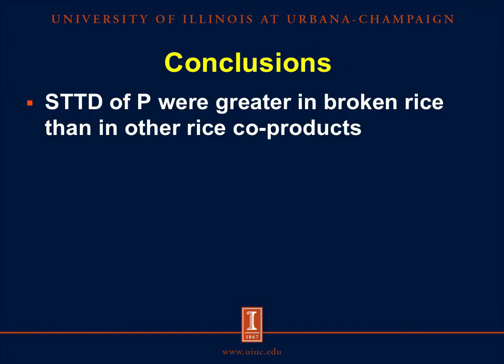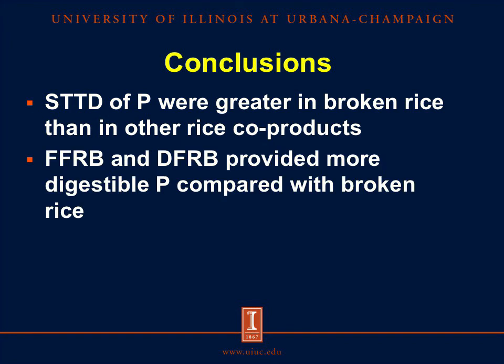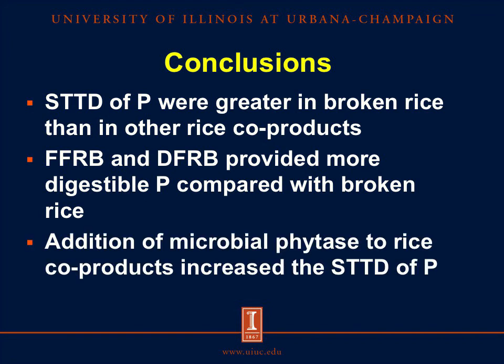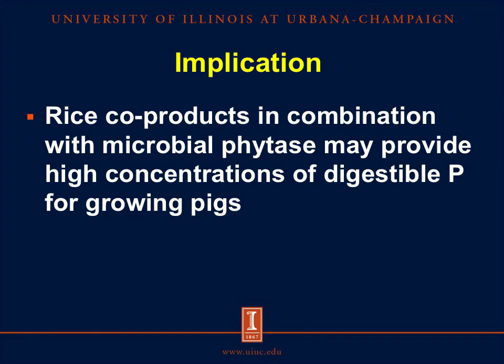In conclusion, STTD of phosphorus was greater in broken rice than in other rice coproducts. Full-fat rice bran and defatted rice bran provide more digestible phosphorus compared with broken rice, and the addition of microbial phytase to rice coproducts increased the STTD of phosphorus. The implication of our results is that using rice coproducts in combination with microbial phytase makes these ingredients valuable sources of digestible phosphorus in diets for growing pigs.